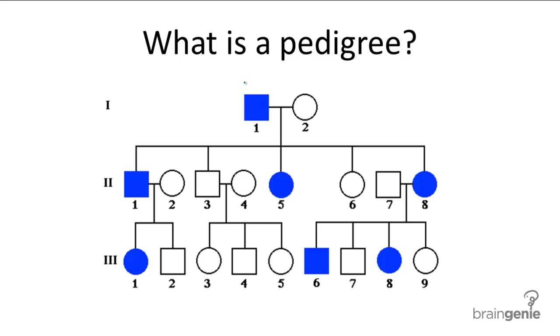By convention, the square represents a male, the circle represents a female. A line between the male and female represents marriage, and any lines branching from that represent offspring.